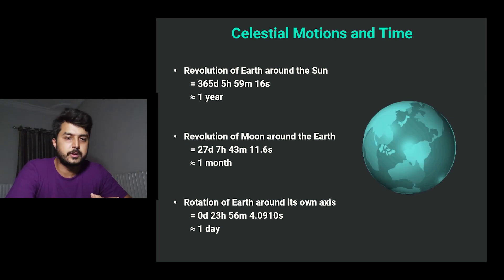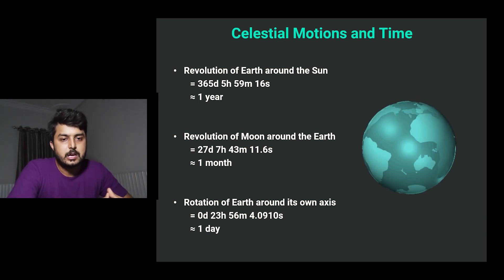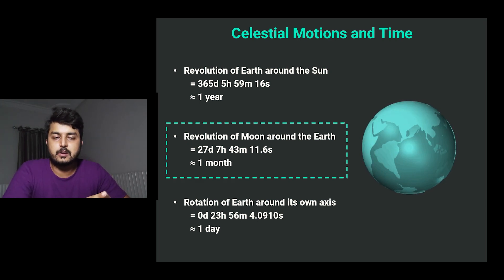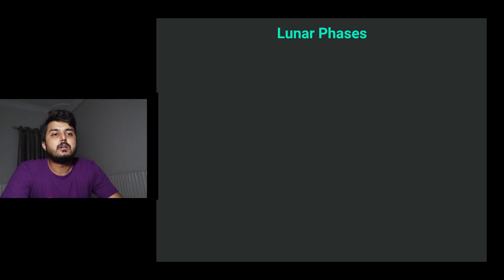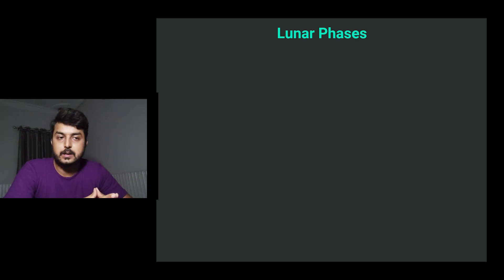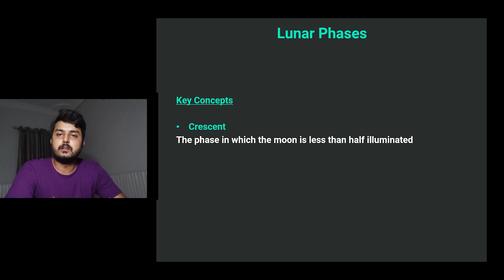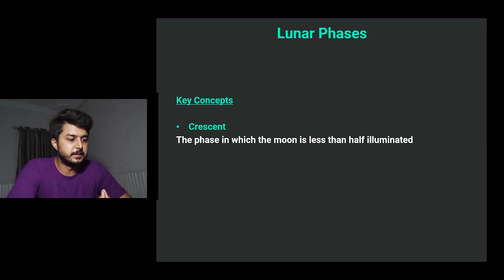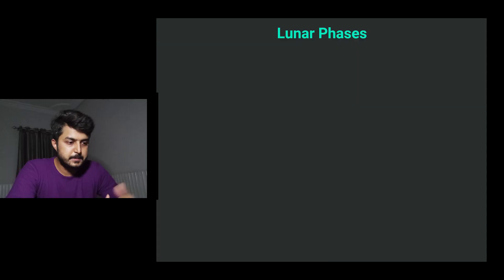The motion related to our topic — the mathematics of moon sighting — is the revolution of the Moon. Now we will deep dive into this and understand the lunar phases. We have different phases like full moon, half moon, and crescent. Two key concepts: a crescent is the phase in which less than half of the moon is illuminated (as seen on the Turkish and Pakistani flags), and gibbous is the phase in which more than half of the moon is illuminated.